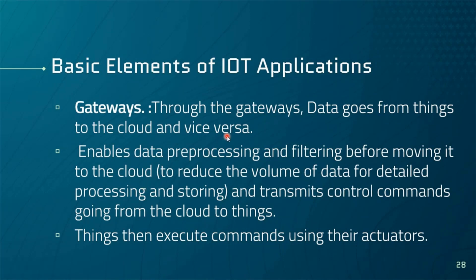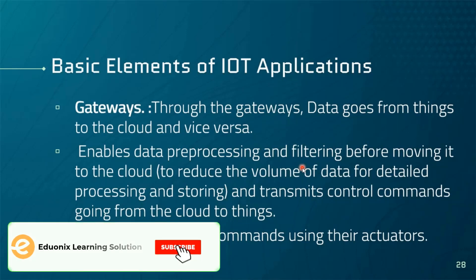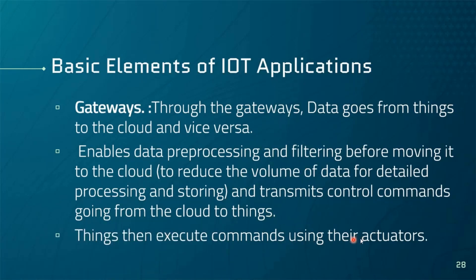The second element is the gateways. Gateways enable data to flow from things to the cloud and vice versa. They perform data pre-processing and filtering before moving data to the cloud, reducing the volume of data for detailed processing and storage. They also transmit control commands from the cloud back to the things, so things can execute commands using their actuators.